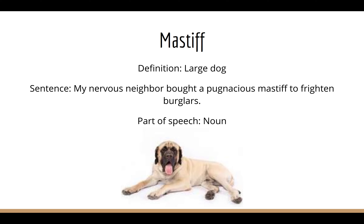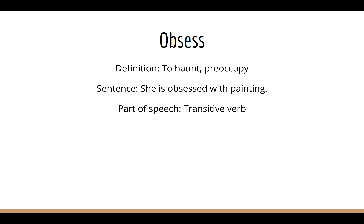In the picture there's a large dog, also known as a Mastiff. The next word is Obsess. Obsess means to haunt, preoccupy. A sentence for Obsess is: she's obsessed with painting. Part of speech is a transitive verb.